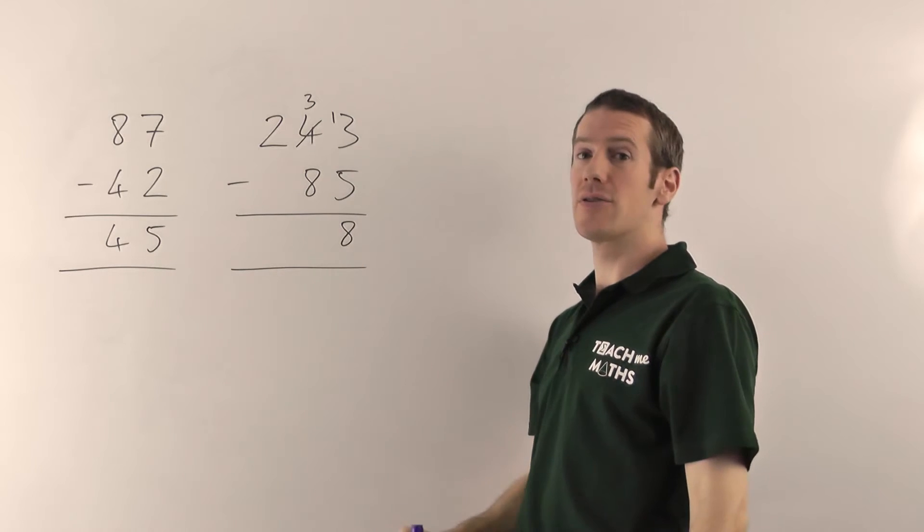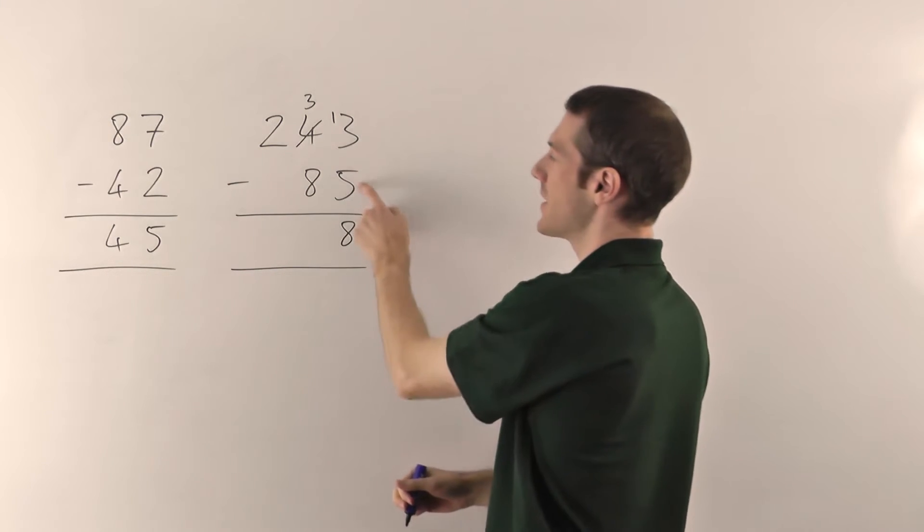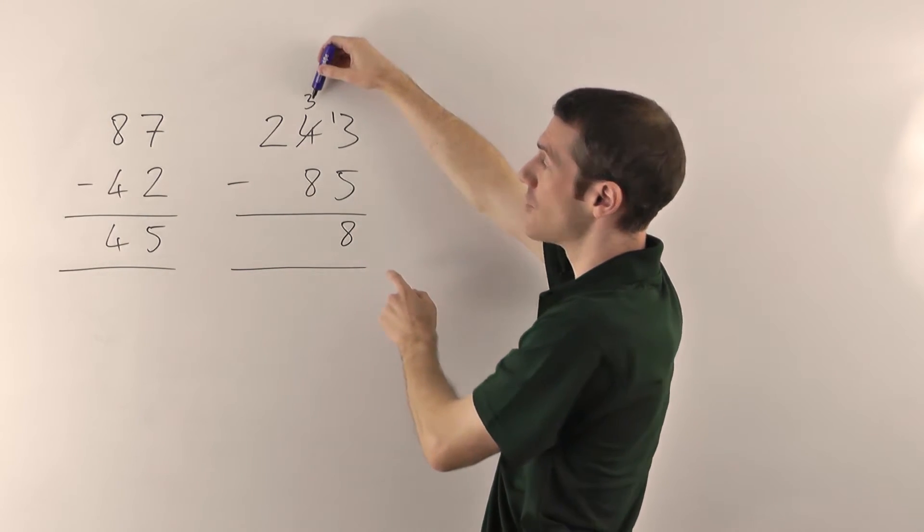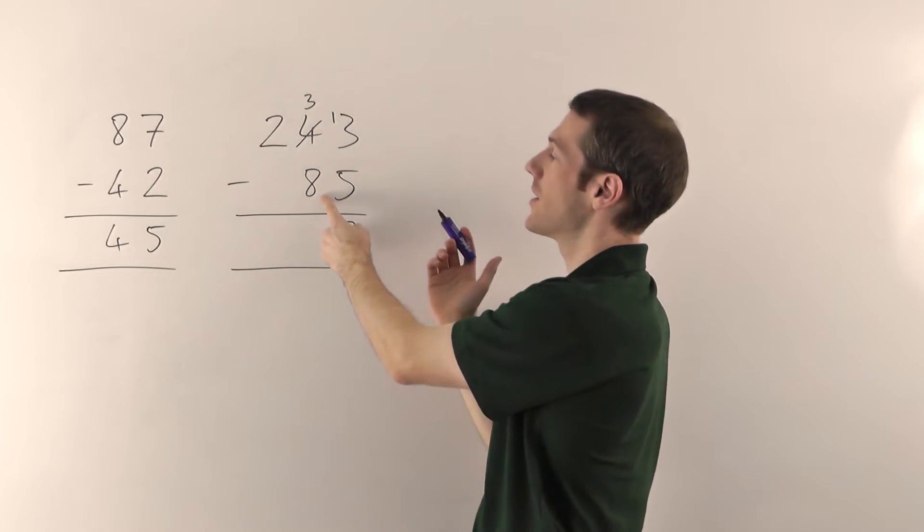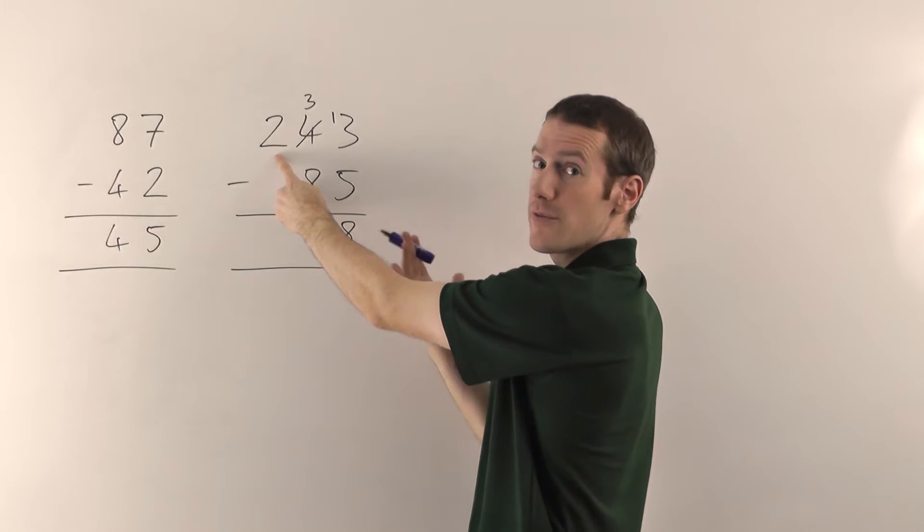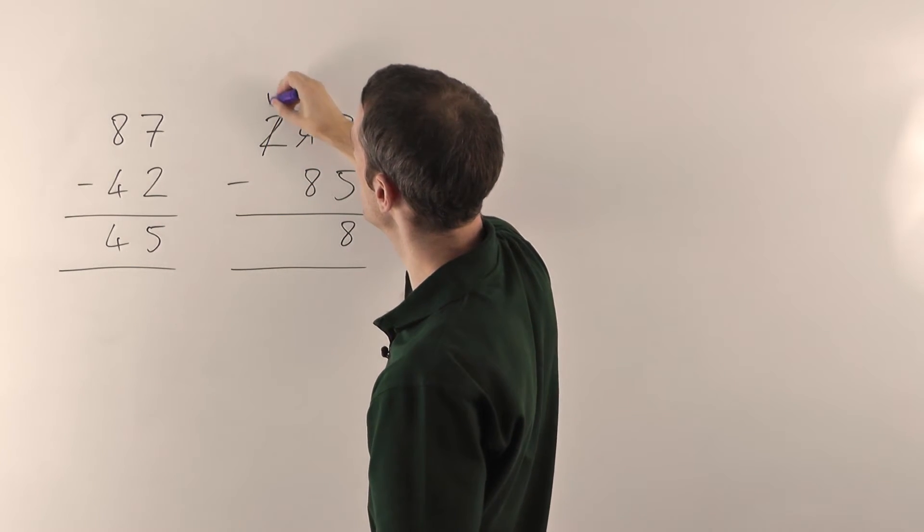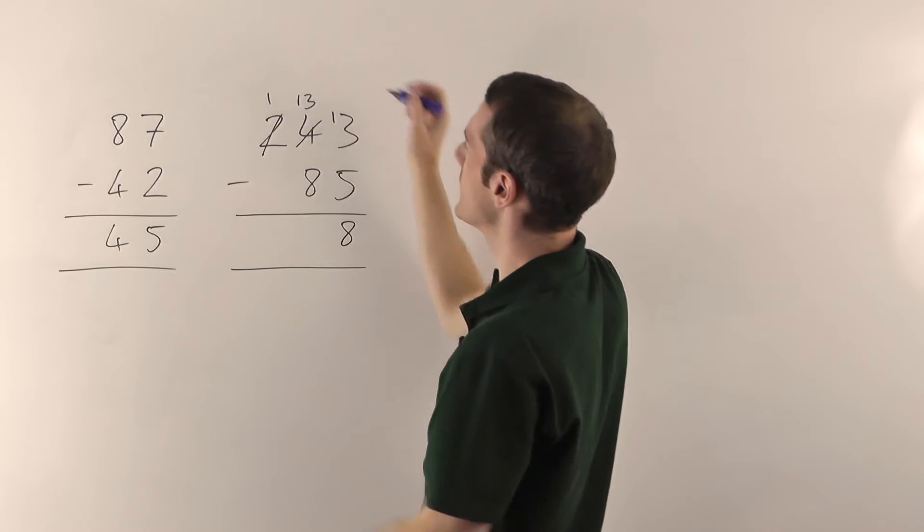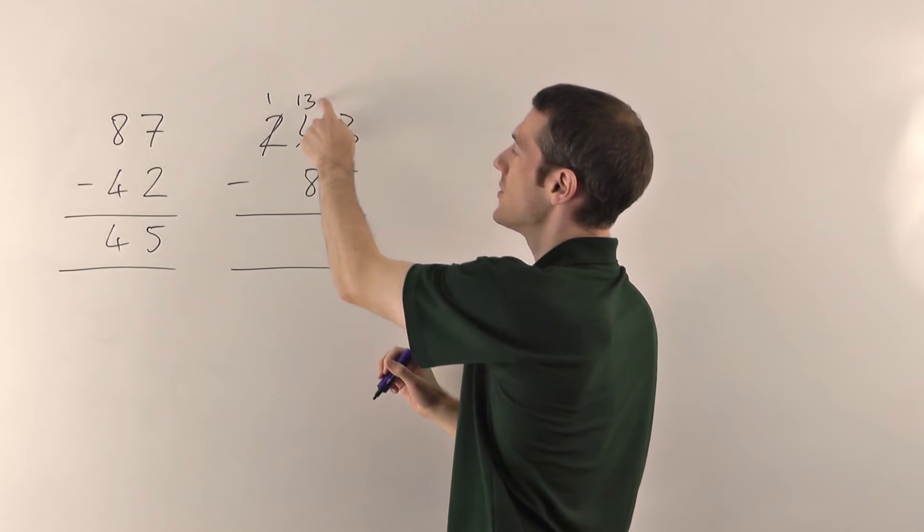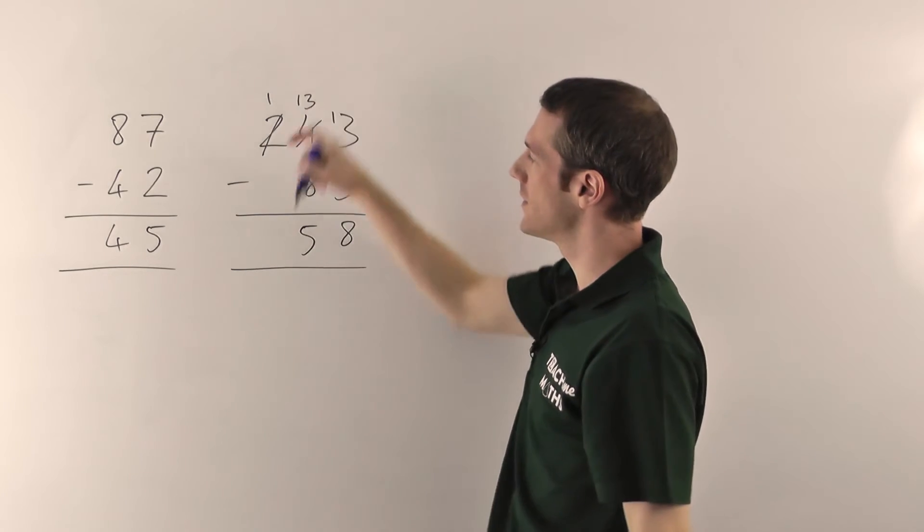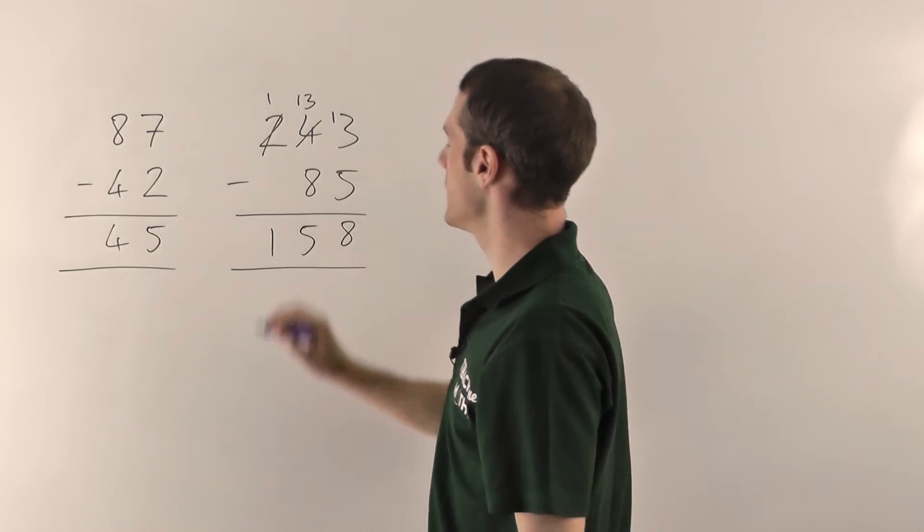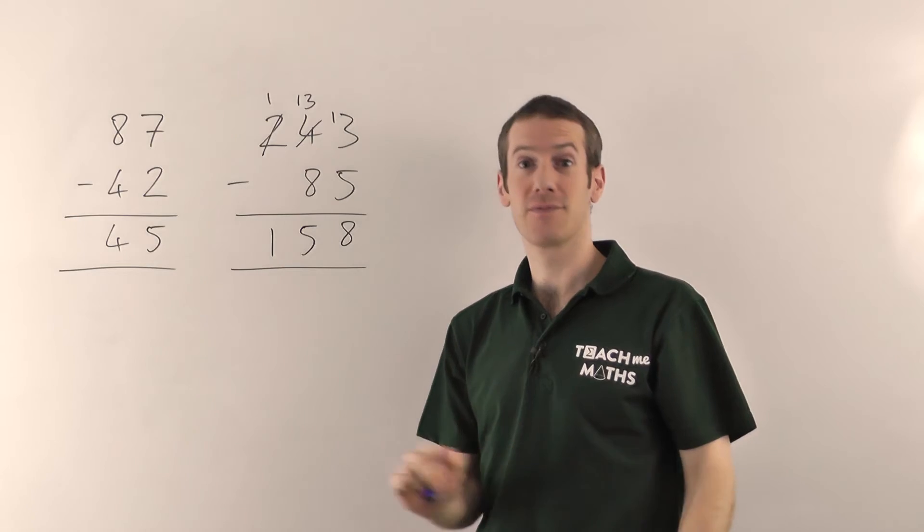And then you can just carry on doing that all the way along. So 13 minus 5 gives you 8. Then you're going to do the 3 minus the 8. This is too big again, so we need to borrow. This time we borrow from the 2. So you knock it down by 1, put your 1 here, that makes this 3 into a 13 again. 13 minus 8 gives you 5. And then 1 minus the nothing gives you 1, 158. Great!